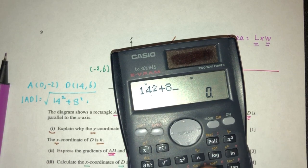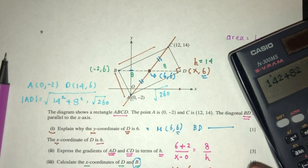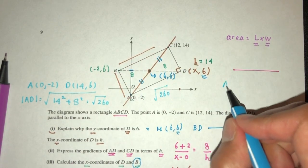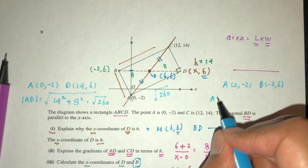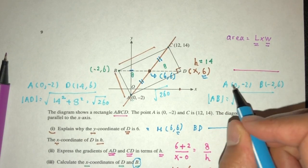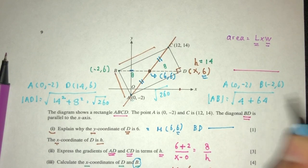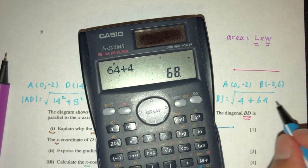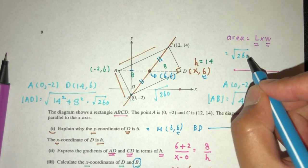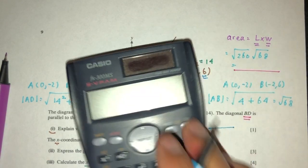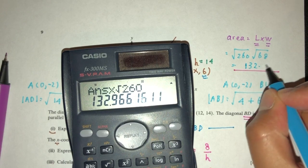That should be 14 square plus 8 square should be root of 260. So this is root of 260. Now for this one, same thing. We have the value of A, which is 0, -2 and B was minus 2, 6. So length of AB will be root of this minus this will be minus 2 square, that should be 4 plus this minus this will be 8 and then square will be 64. 64 plus 4 will be root of 68. So finally for the area will be root of 260 times root of 68. That should be 132.966.